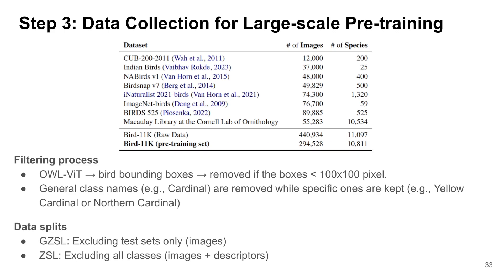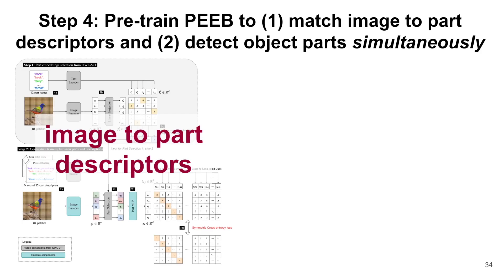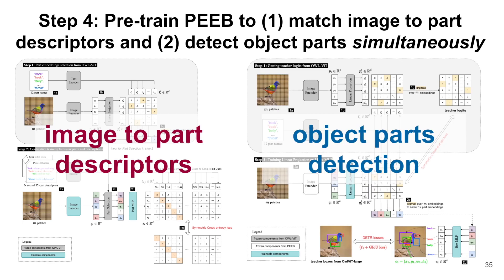For a fair comparison with baselines, we have two pre-training datasets for two experimental settings. The first is Generalized Zero-Shot Learning (GZSL), where we exclude test images — the model still sees training images and their bird descriptors. The second is Zero-Shot Learning (ZSL), which is stricter: we exclude the entire test classes and their images from pre-training to ensure the model has never seen these classes. The last step is to pre-train PIP on Bird-11K to simultaneously match images to part descriptors and detect object parts.